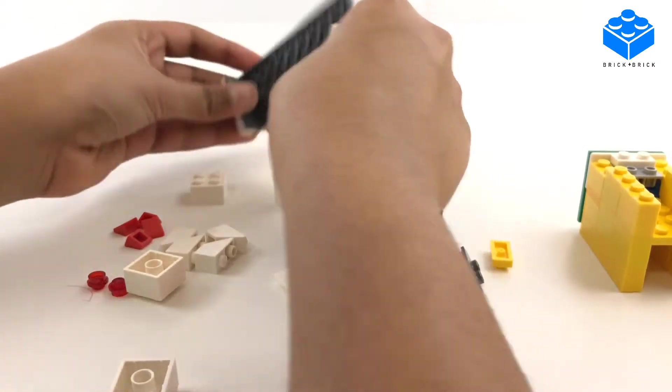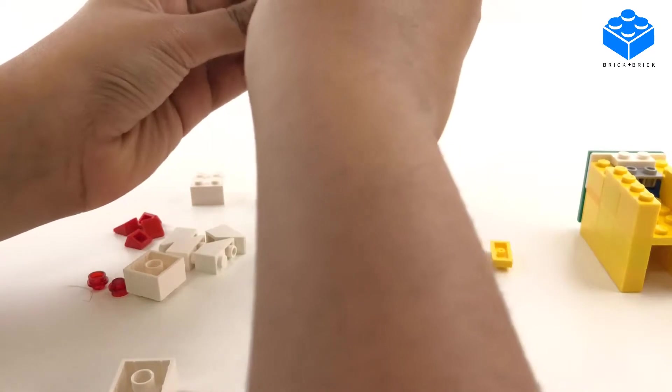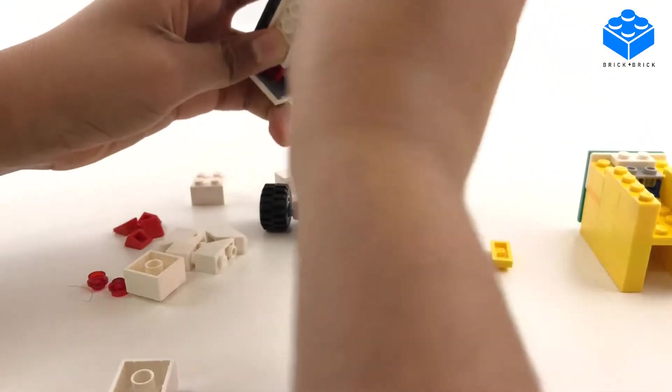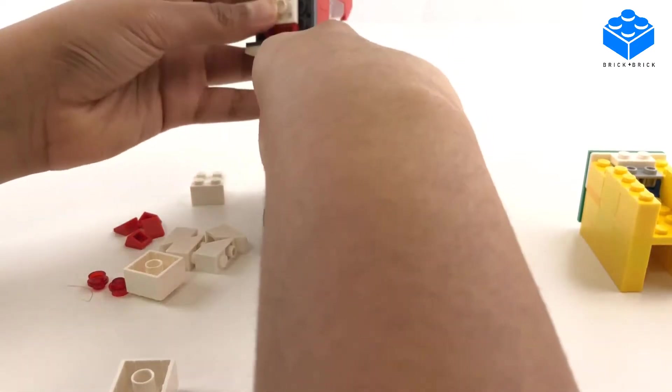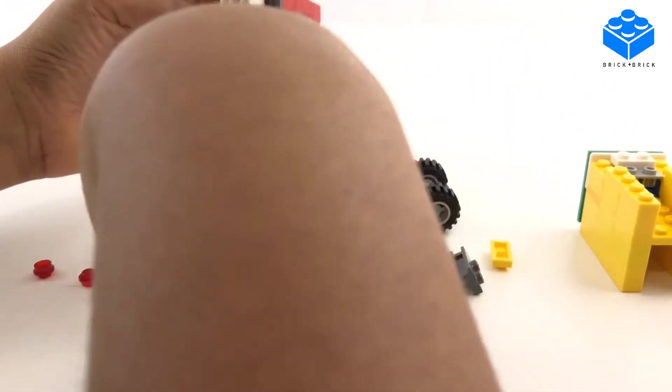So the red piece will go here, the two by eight will go here, the bumper will go here, and then everything that holds it together goes in.